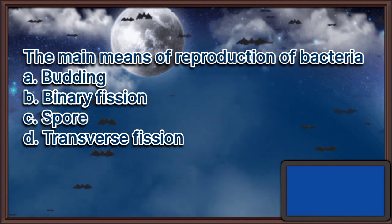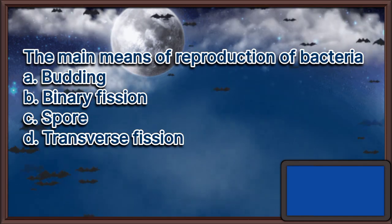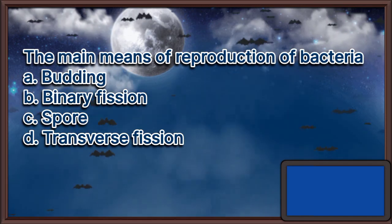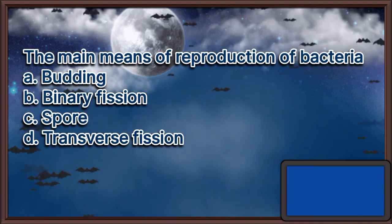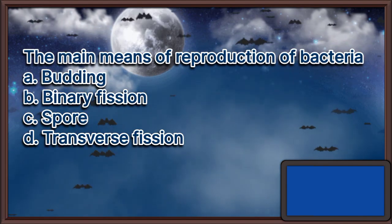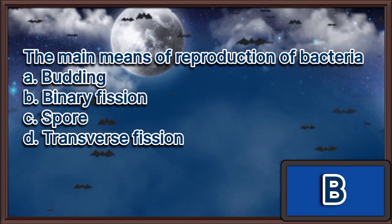The main means of reproduction of bacteria. A. Budding. B. Binary fission. C. Spore. D. Transverse fission. The answer is letter B.